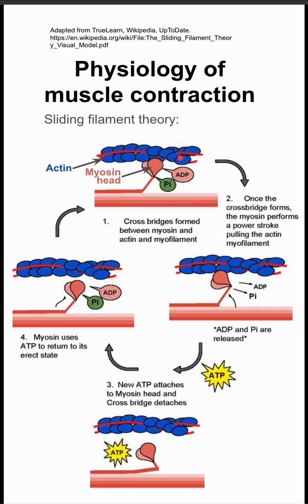You form the cross bridge, you again do a power stroke, you release the ADP and the phosphate group, and a new ATP is required to reload the system.